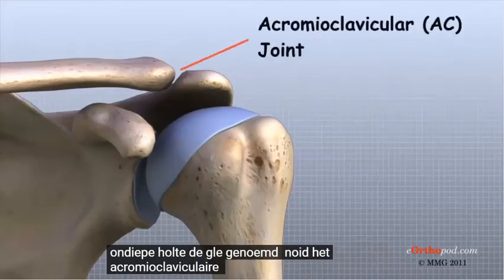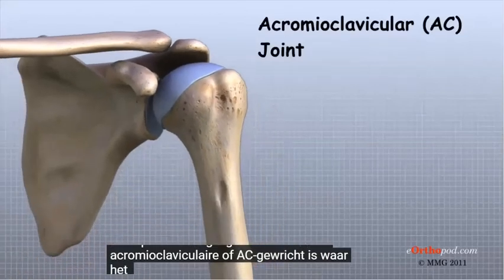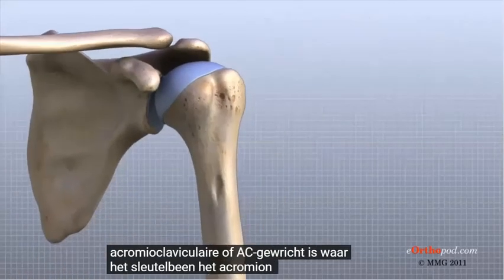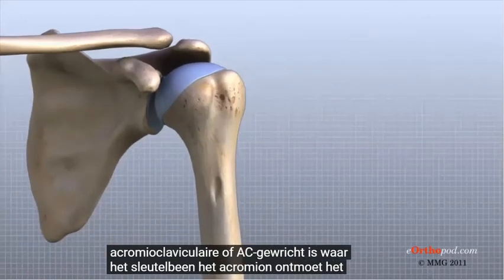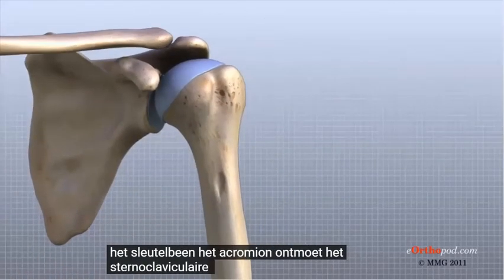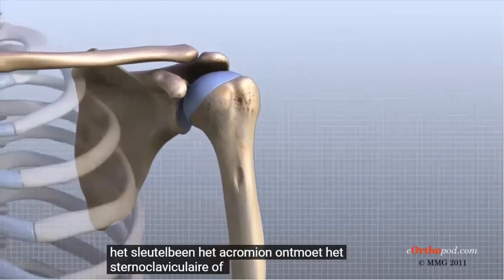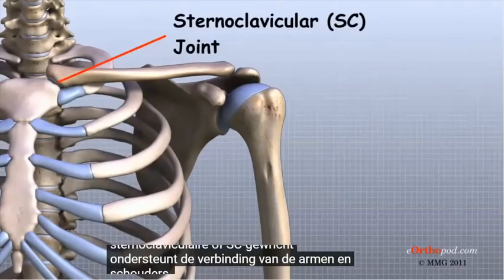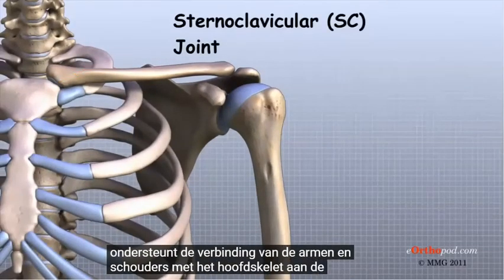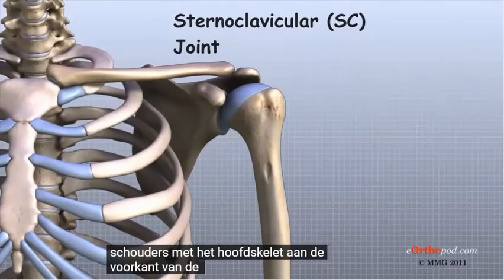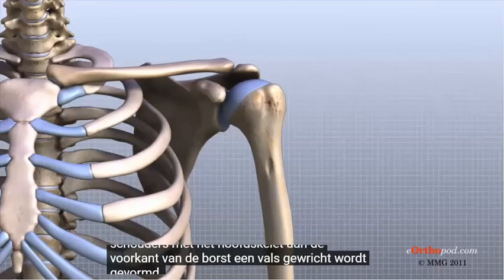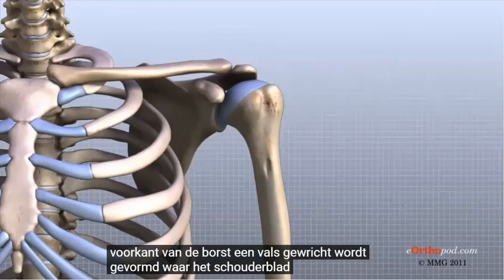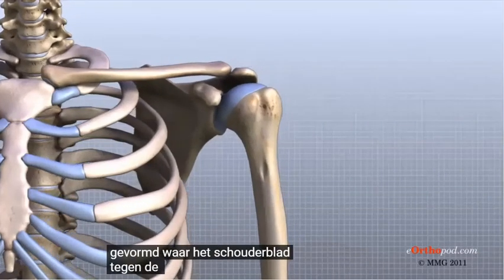The acromioclavicular, or AC joint, is where the clavicle meets the acromion. The sternoclavicular, or SC joint, supports the connection of the arms and shoulders to the main skeleton on the front of the chest. A false joint is formed where the shoulder blade glides against the rib cage.